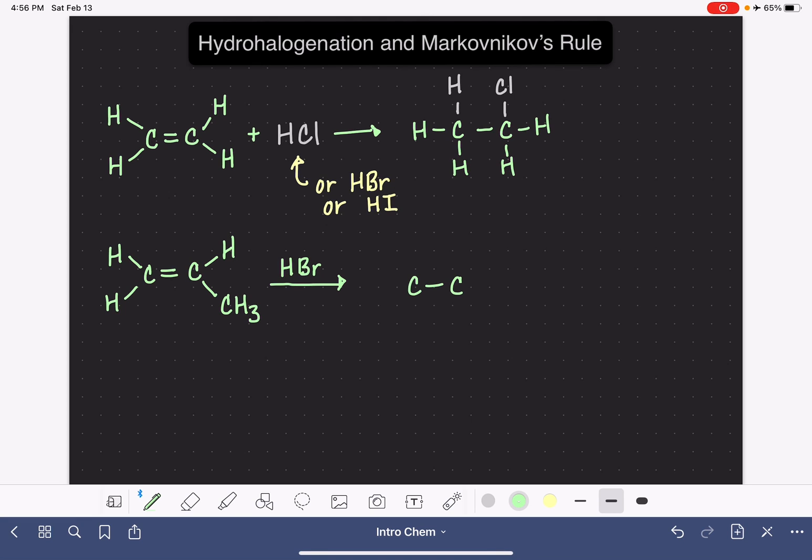Our carbon-carbon double bond is going to be converted to the single bond, and all of the things that are already on the carbon will continue to stay on the carbon atoms. So we'll be adding the HBr molecule to the carbons of the alkene.